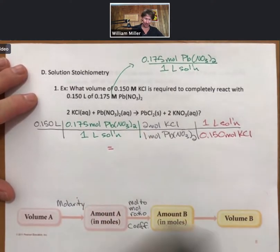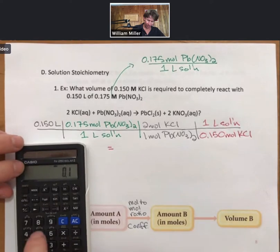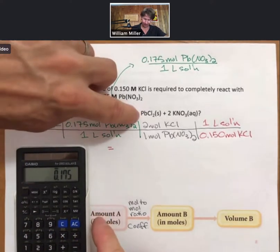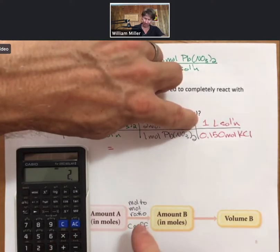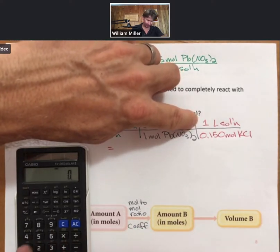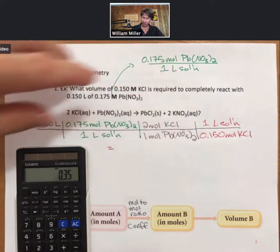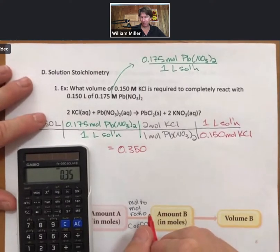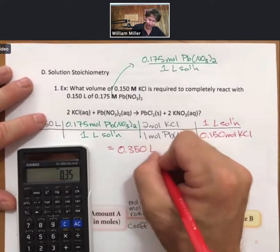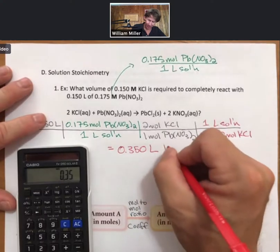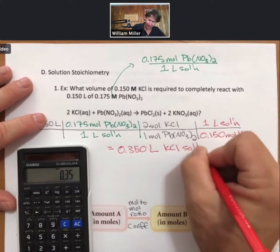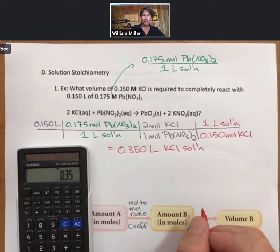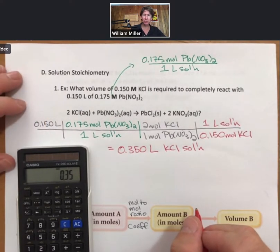Multiplying this out, I have 0.15 times 0.175 across the top, times 2, divided by 0.150, which gives 0.350 to 3 sig figs liters. And I'll be careful here. I do have two solutions. It is liters of potassium chloride solution that I'm looking for here. Very typical example of solution stoichiometry.